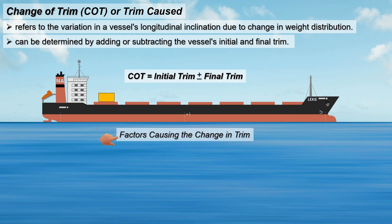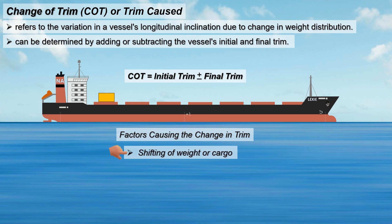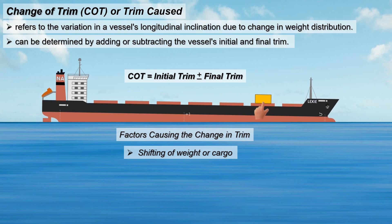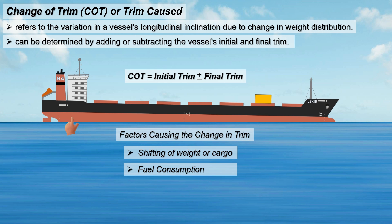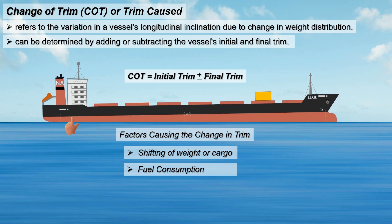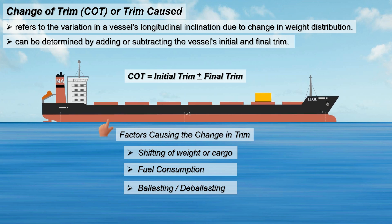Here are several factors that cause a change in the ship's trim. First, shifting of weight or cargo — moving cargo within the ship alters weight distribution, affecting the ship's trim. Next, fuel consumption — as fuel is used, the ship's weight distribution changes, impacting trim. And ballasting or deballasting — adding or removing ballast water changes the vessel's trim.